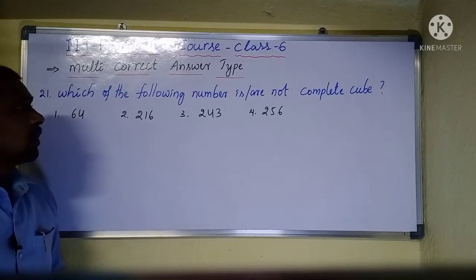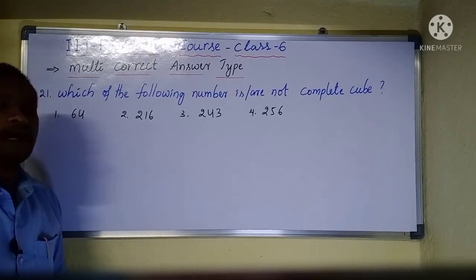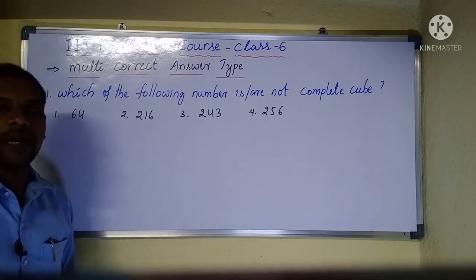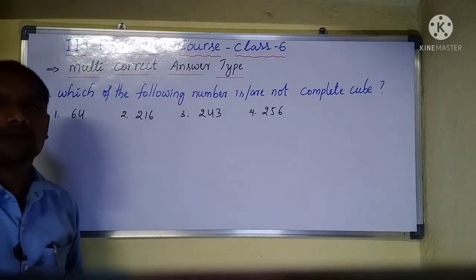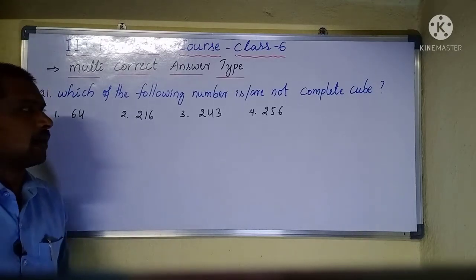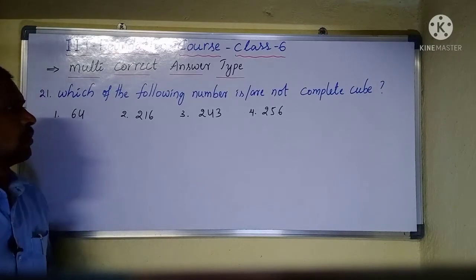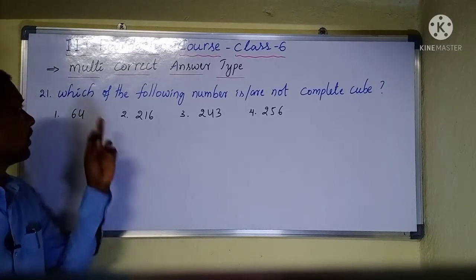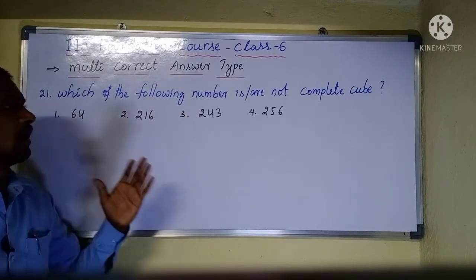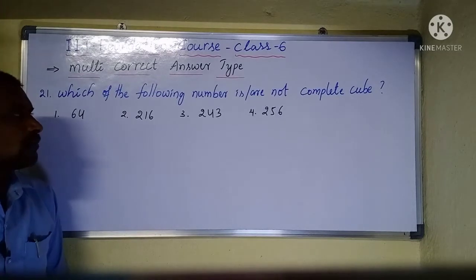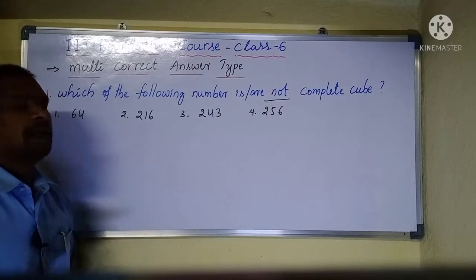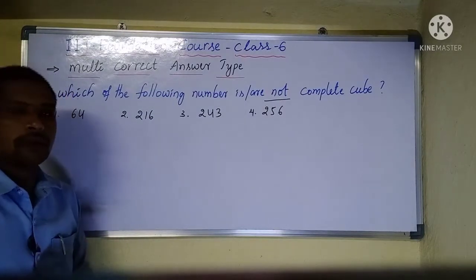Which of the following numbers is not a perfect cube? They have given four options, and among these, at least two correct answers will be there. Observe the statement carefully: which of the following options is not a perfect cube?